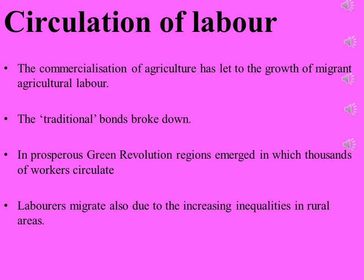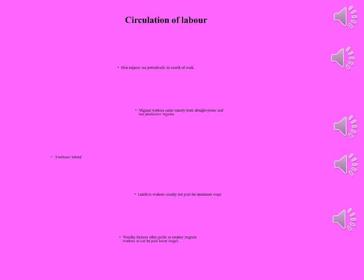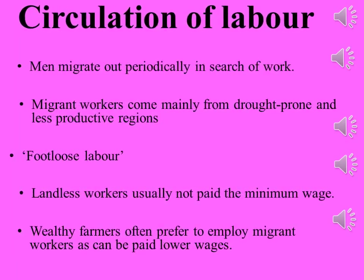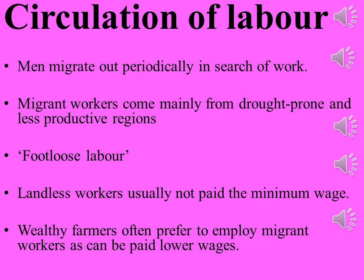People from rural areas collected in those areas which were prosperous due to the green revolution, especially in Punjab. Some migration was also because of inequalities or superstitions in rural areas. As per Indian tradition, men usually migrate out of their homes to work for their families, while women stay at their husband's home and take care of his parents.